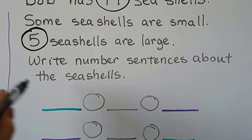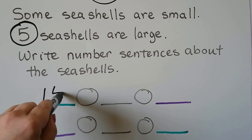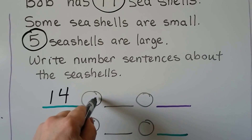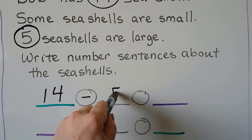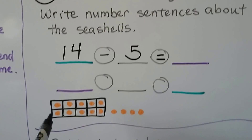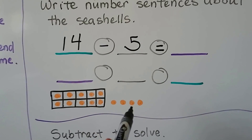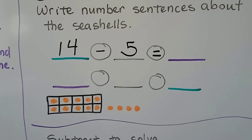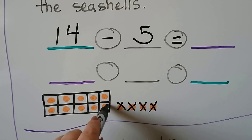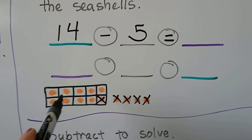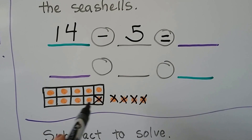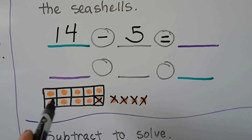We do fourteen as the minuend and subtract the five. Using counters — counting up to fourteen then removing five — that leaves nine. We had a ten frame with one missing, so we know it's nine.